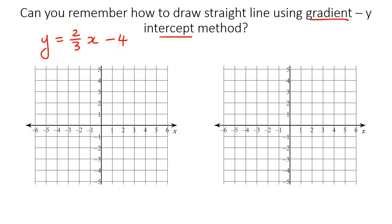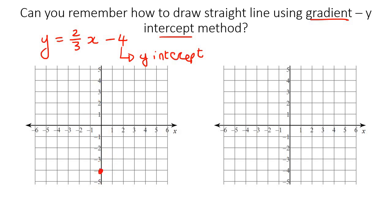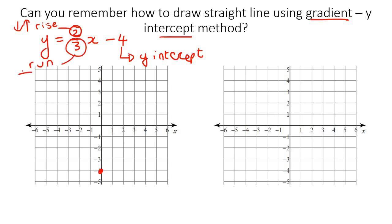What you do is take the y-intercept value, which is negative 4, and go to the y-axis and put a little dot at negative 4. Then you look at the slope — the top number is the rise, which is how much it goes up or down, and the bottom number is the run, which is left and right. So the rise is 2, so we go 2 up, and then the run is 3, so we go 3 to the right, put our little dot, connect those two dots, and that is how we draw a straight line.